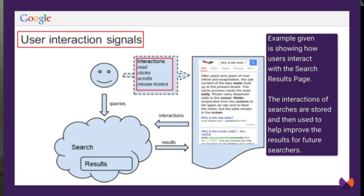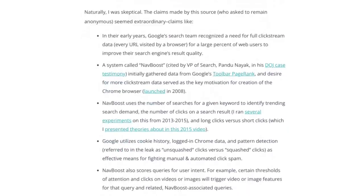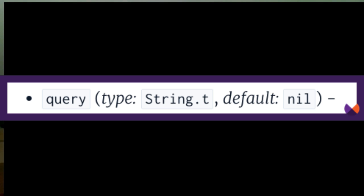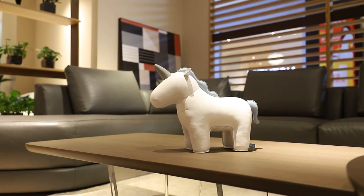The SEO community recently discovered a massive document describing attributes that could be used for API calls to Google's cloud platform. Many of these attributes clearly relate to search, and several of them mention NavBoost. NavBoost stores the query — whatever keyword or phrase you search — in an attribute called 'query.' It stores information about impressions a website gets and the quality of clicks, in attributes called bad clicks, good clicks, last longest clicks, and more, including one I'd like to know more about called unicorn clicks.